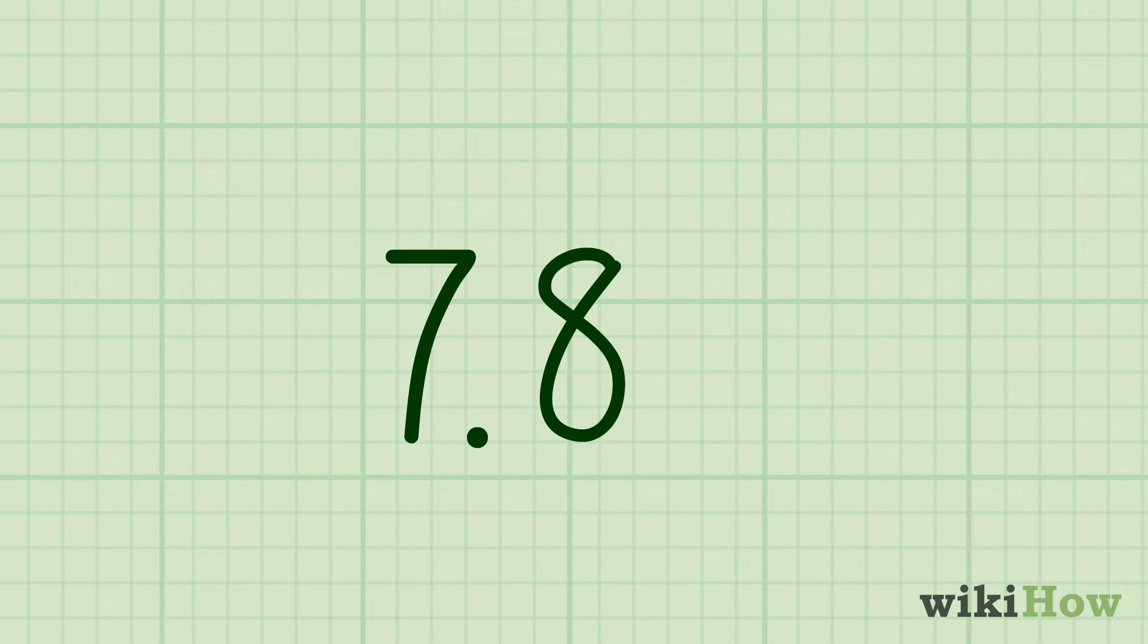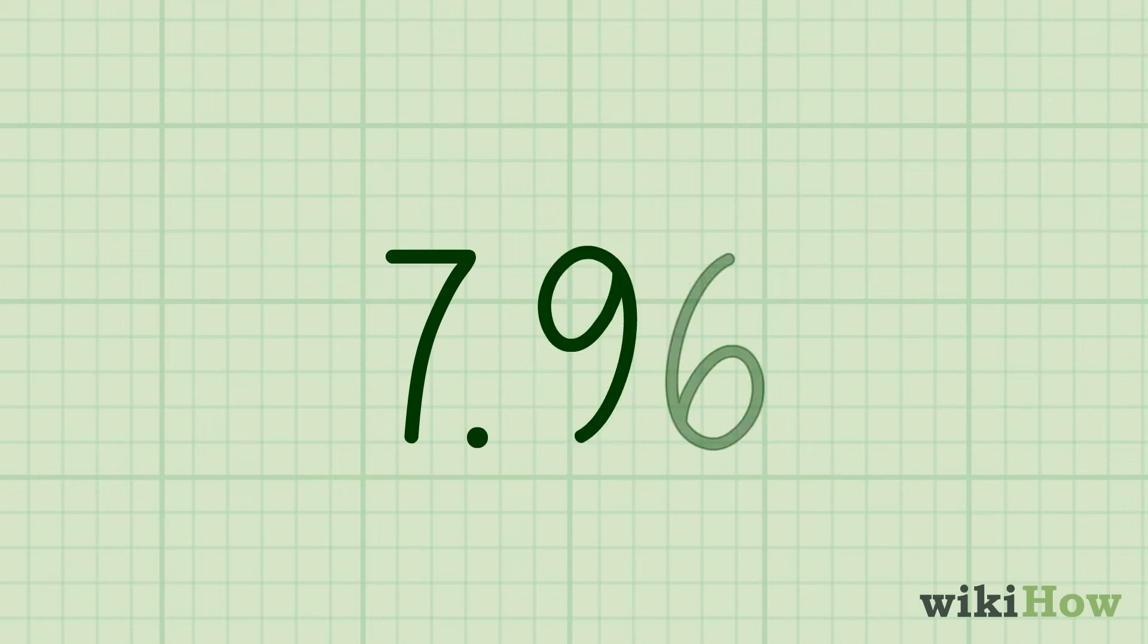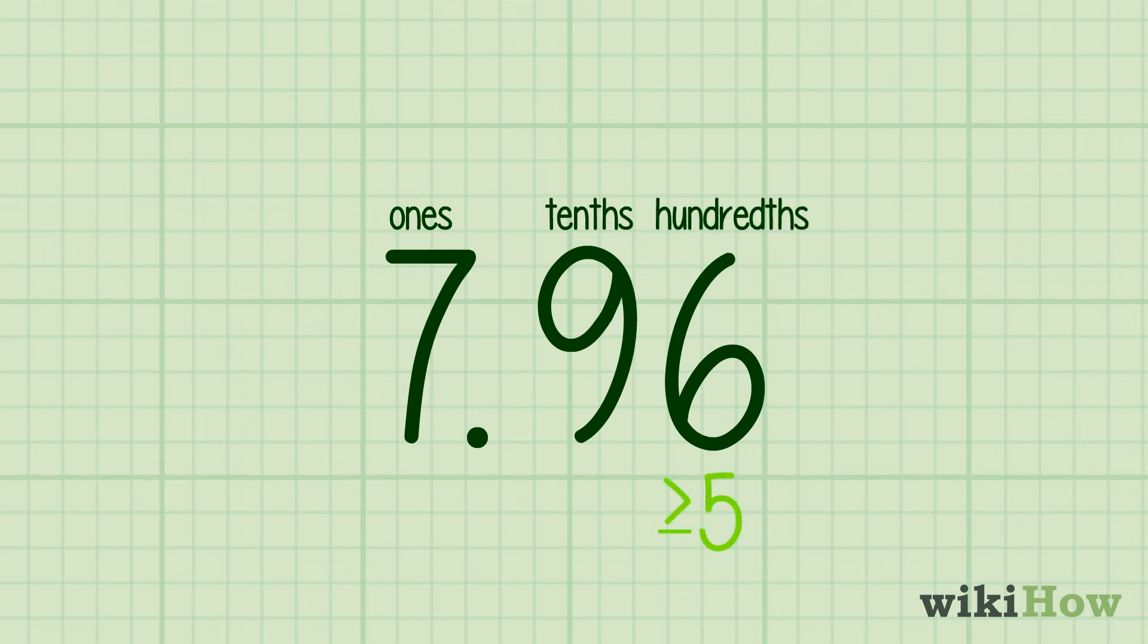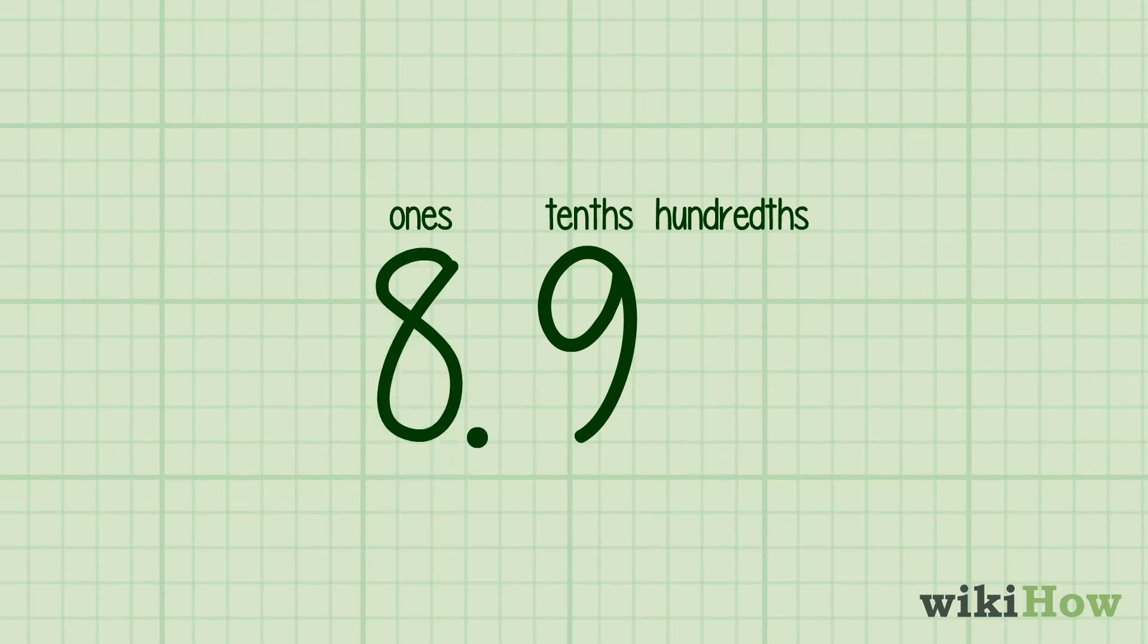While rounding to the tenths place is usually pretty simple, there are a couple of special situations to keep in mind. For instance, if there's a 9 in the tenths place and a number greater than or equal to 5 in the hundredths place, you'll need to round up the number in the ones place to the left of the decimal point and change the number in the tenths place to 0.